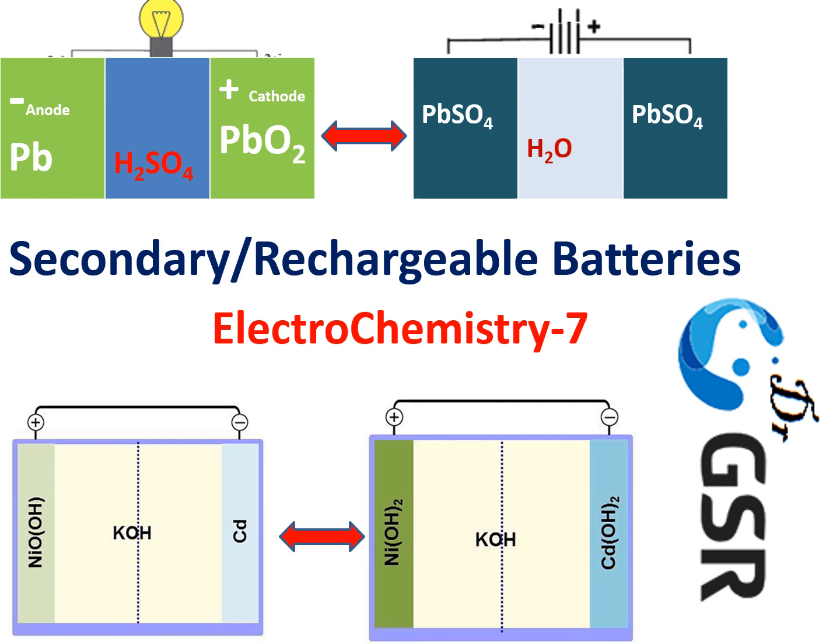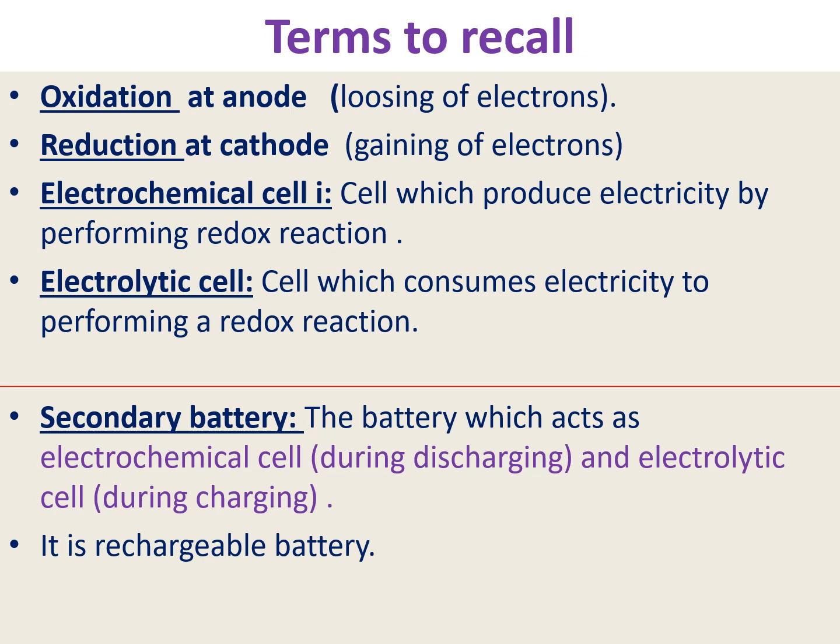Welcome to my channel. Today's topic is secondary or rechargeable batteries — this is the seventh video in electrochemistry. Just to recall the previous important terms: oxidation always takes place at the anode, meaning losing of electrons; reduction takes place at the cathode, meaning gaining of electrons. An electrochemical cell produces electricity by performing a spontaneous redox reaction, while an electrolytic cell consumes electricity to perform a redox reaction.